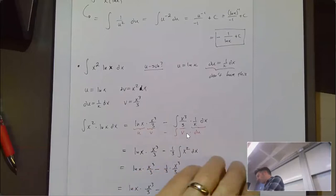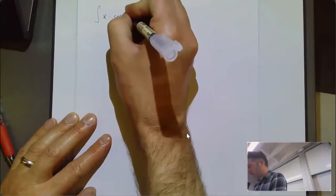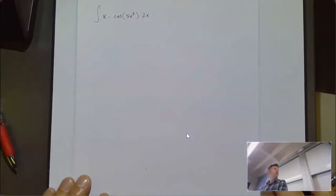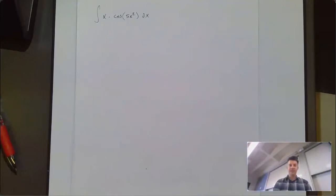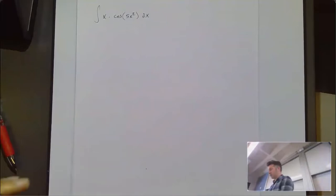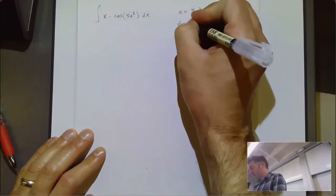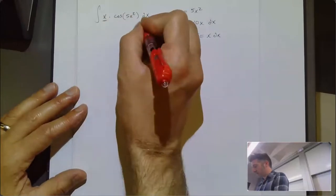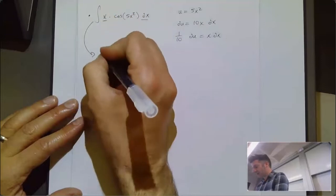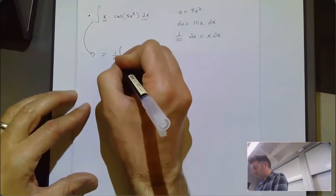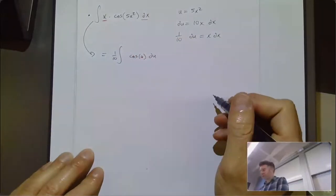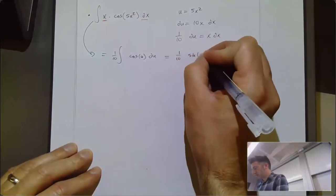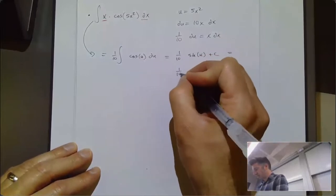Let's do two more and then talk about a general way to pick u. First, the integral of x·cos(5x²). I should definitely try u-sub first. Letting u equal 5x², du is 10x dx, so one-tenth du equals x dx. I have an x dx, so this becomes the integral of one-tenth·cos(u) du, which is one-tenth·sin(u) plus C, which is one-tenth·sin(5x²) plus C.